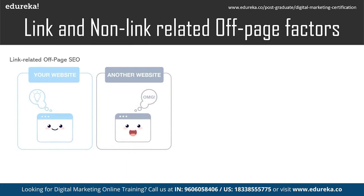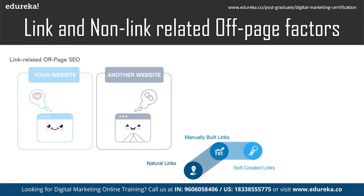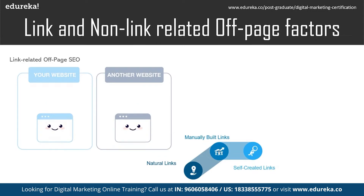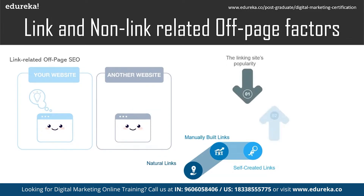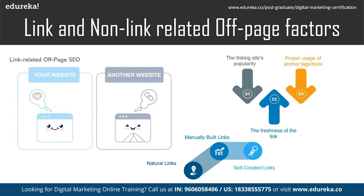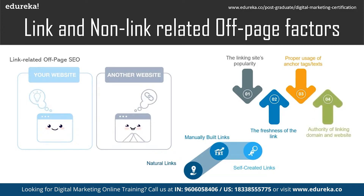There are three main types of links: natural links, manually built links, and self-created links. Natural links are created organically, manually built links are ones you deliberately create to link to, and self-created links are anchor tags. The major factors influencing these links are the linking site's popularity, the freshness of the link, proper usage of anchor text or anchor tags, and the authority of the linking domain and website.